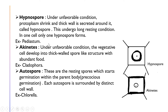The next type is hypnospore. Under unfavorable conditions, the protoplasm shrinks and a thick wall is secreted around it — this is known as a hypnospore. It undergoes a long resting condition, and only one hypnospore forms per cell. Example: Pediastrum. Next are akinetes: under unfavorable conditions, the vegetative cell develops into a thick-walled spore-like structure with abundant food.